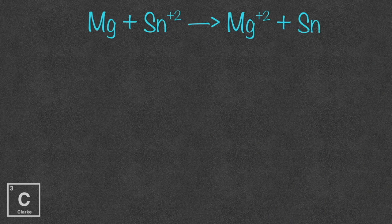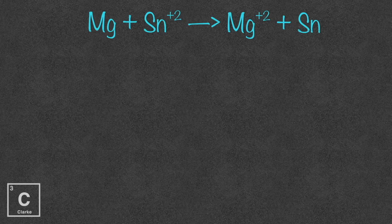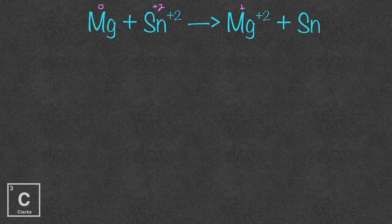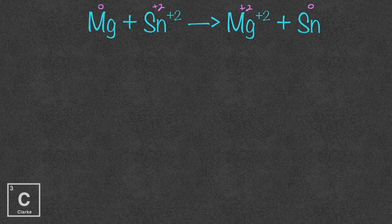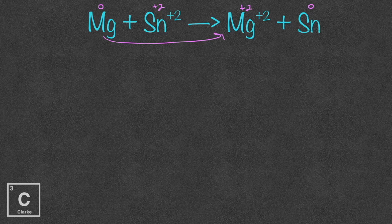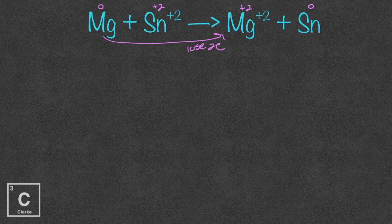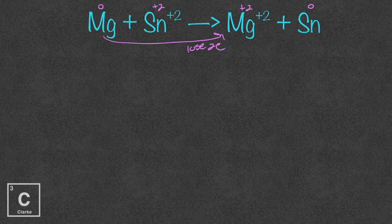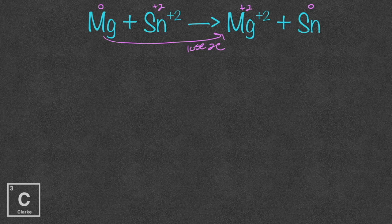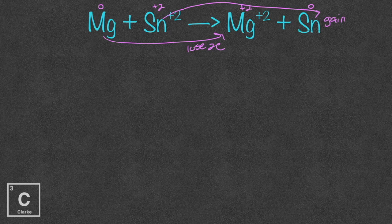Okay, look at our first example. We just have a basic redox reaction. Let's label our charges. Magnesium is a zero. It's a free element. Tin is a plus two. Same with this magnesium and free element zero. Magnesium, since we're going from zero to plus two, we're getting more positive. So we're losing two electrons. Tin is going from plus two to zero, going in a negative direction, getting more negative. So tin gained two electrons.